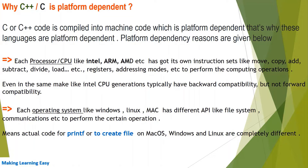When we compile C or C++ code it is converted into machine code, which is itself platform dependent — that's why these languages are platform dependent. The reasons for platform dependency are: platform consists of an operating system and a processor. From the processor point of view, each processor like Intel, ARM, or AMD has its own instruction sets — for example, to move data, copy data, add, subtract, divide, or load — as well as its own types of registers and addressing modes to perform computation.